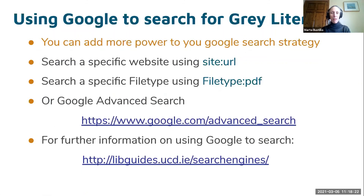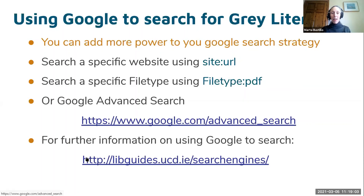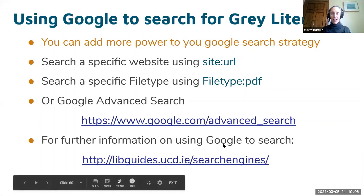Here are some grey literature specific websites. For health research published in Ireland, the Lenus database is brilliant - it gives you everything that has been published, including preprints, author versions, grey literature reports. OpenGrey focuses mostly on European grey literature and mostly reports. Grey Literature Report is more international, and BASE is also more international. But you need to think about which government departments and organizations are probably doing research in your area, then check their websites and their publications sections.